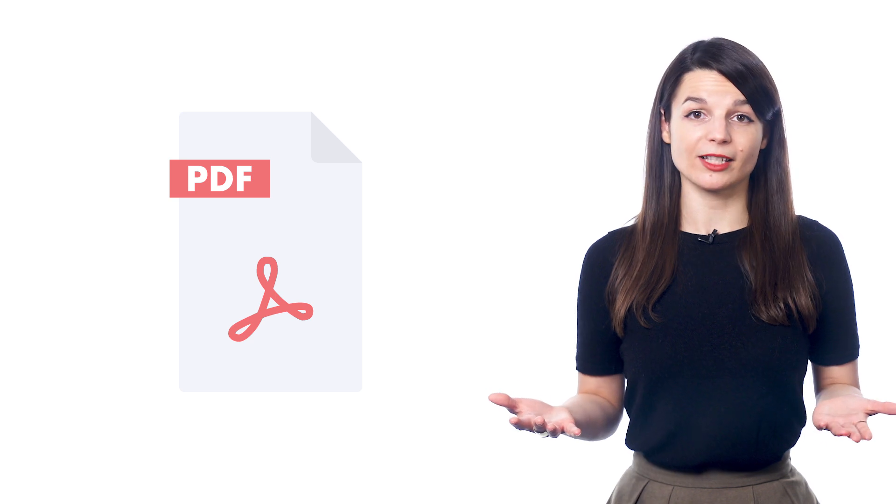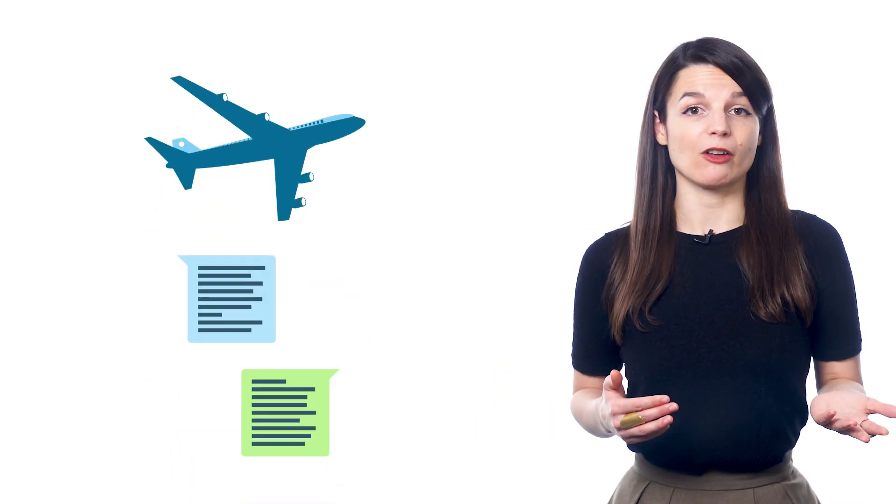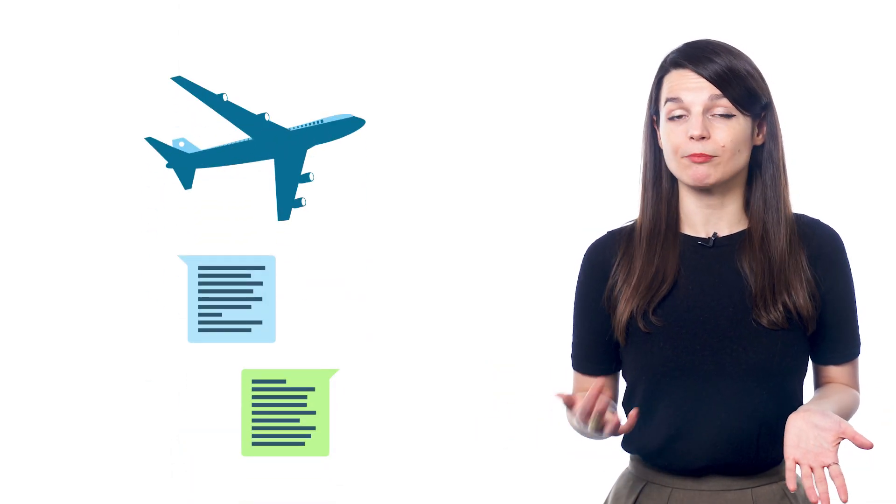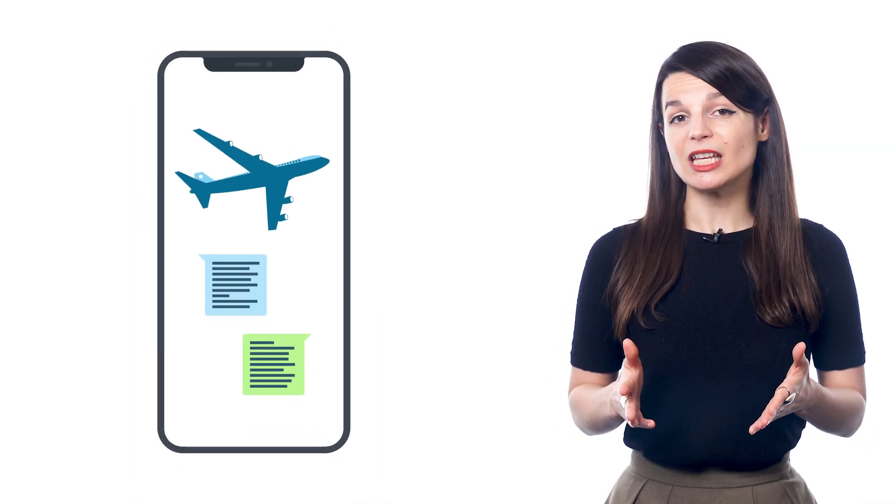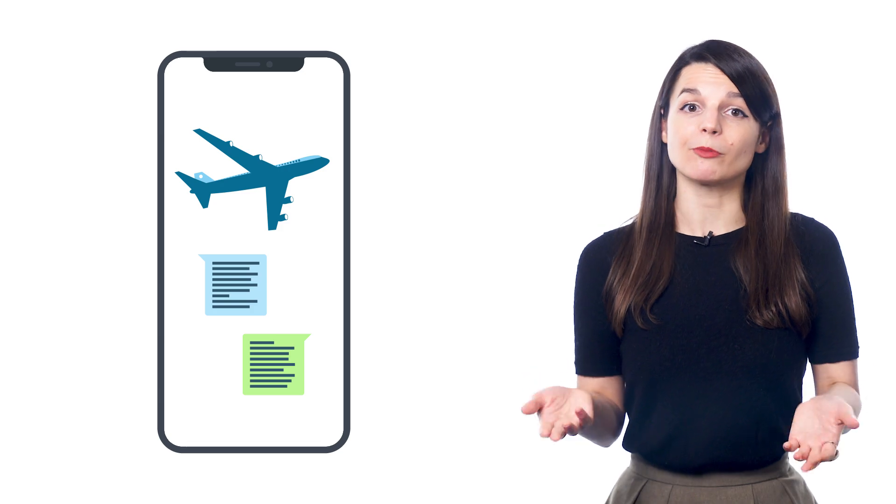You can also print out PDF conversation cheat sheets and infographics. These teach you the must-know words and phrases for all kinds of topics. Travel, basic conversations, talking about hobbies, airport vocab, and much more. With the infographics, you can save the images to your phone and just swipe through them for a quick review.